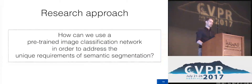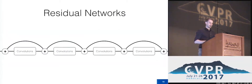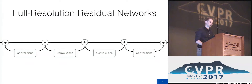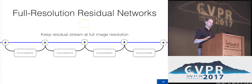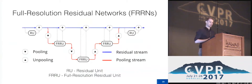In this work, we wanted to start from scratch and design a network architecture that specifically caters to the unique requirements of semantic segmentation. For this, we turn to ResNet. You can view ResNet as having a processing lane that is only updated using residuals. Our idea is to keep such a processing lane at the full image resolution, computing residuals at full resolution throughout the network. However, if we only did this, we wouldn't achieve a large receptive field, which is required for good object detection and semantic segmentation. So we add another processing stream implementing an encoder-decoder hierarchy.